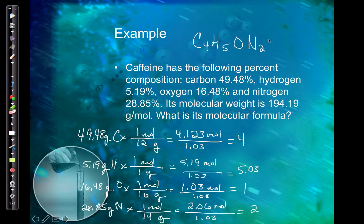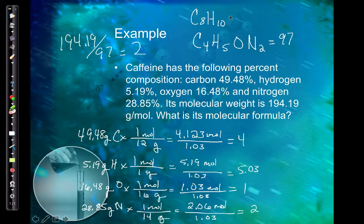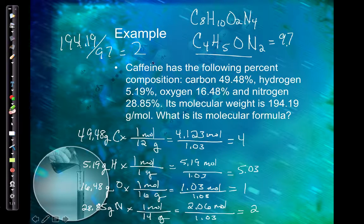The empirical formula mass is 97 g/mol, and the molecular mass is 194 g/mol — approximately twice as large. That means we have twice the number of atoms. So multiply all subscripts by 2: 8 carbons, 10 hydrogens, 2 oxygens, and 4 nitrogens — giving the molecular formula C₈H₁₀N₄O₂. If the molecular mass and empirical mass were the same, the empirical and molecular formulas would be identical.